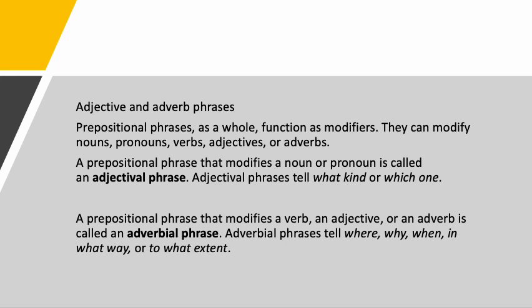Adjective and adverb phrases: prepositional phrases as a whole function as modifiers. They can modify nouns, pronouns, verbs, adjectives, or adverbs. A prepositional phrase that modifies a noun or a pronoun is called an adjectival phrase — it tells you what kind or which one. A prepositional phrase that modifies a verb, an adjective, or an adverb is called an adverbial phrase, and it answers questions like where, why, when, in what way, or to what extent.